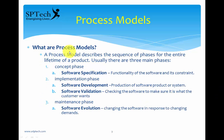What is a process model? A process model describes the sequence of phases for the entire lifetime of a product. Usually there are three main phases. Whenever a software has to be developed, it has to undergo various phases, which we have seen in the previous lecture as well. Any software which has to be developed undergoes three main phases.